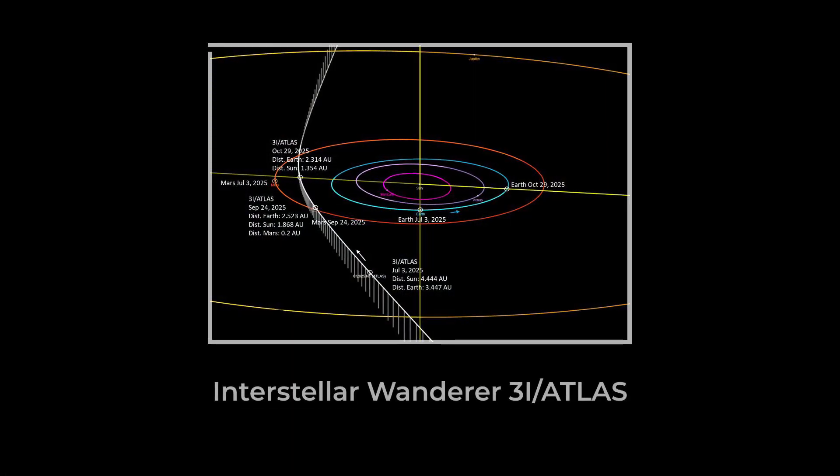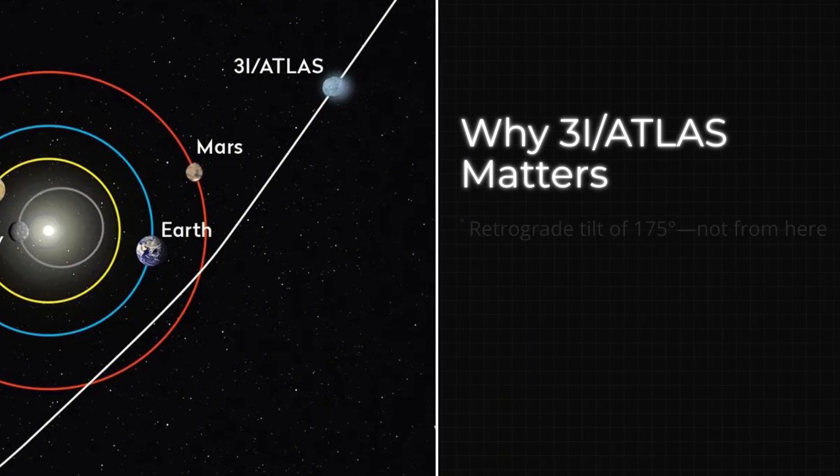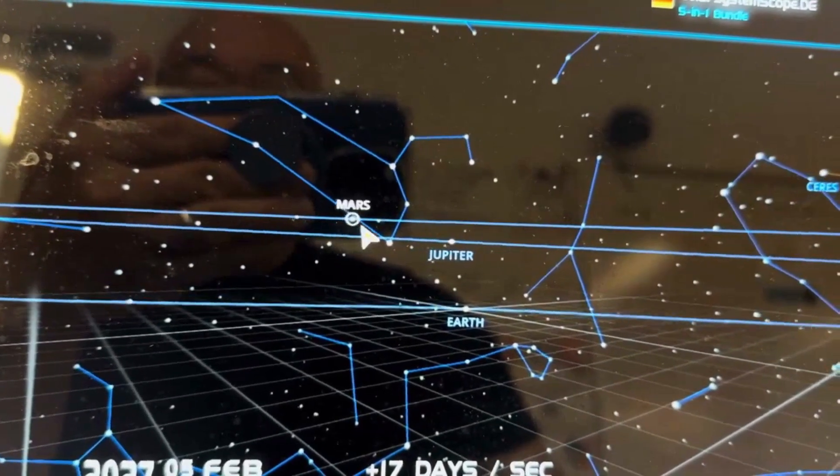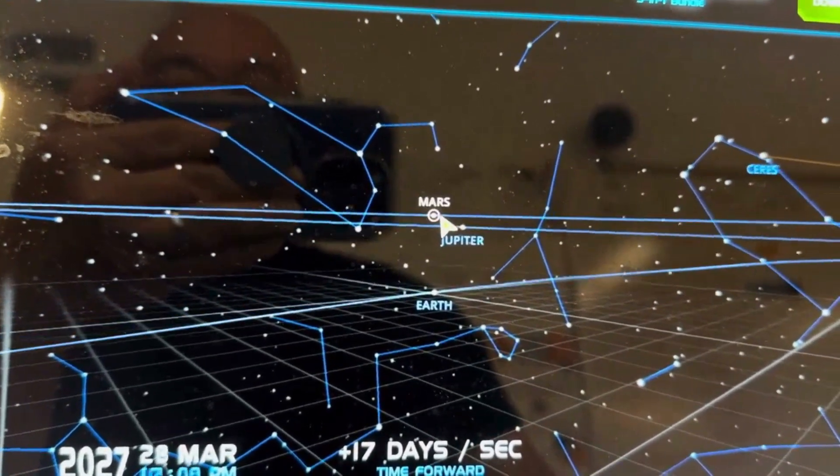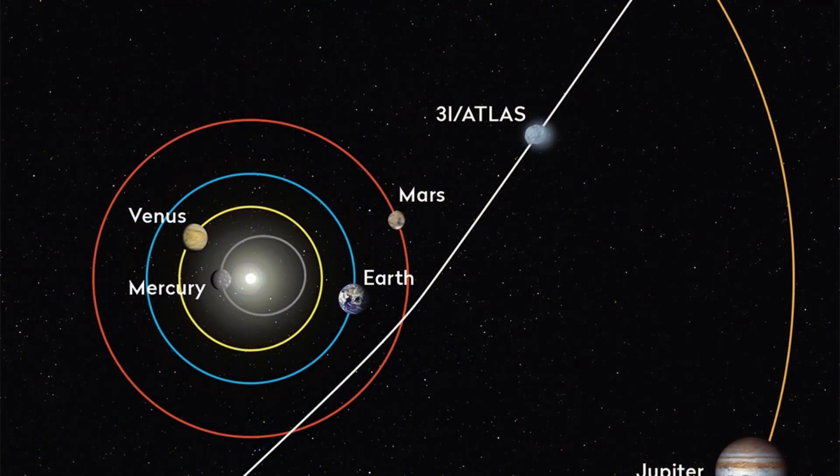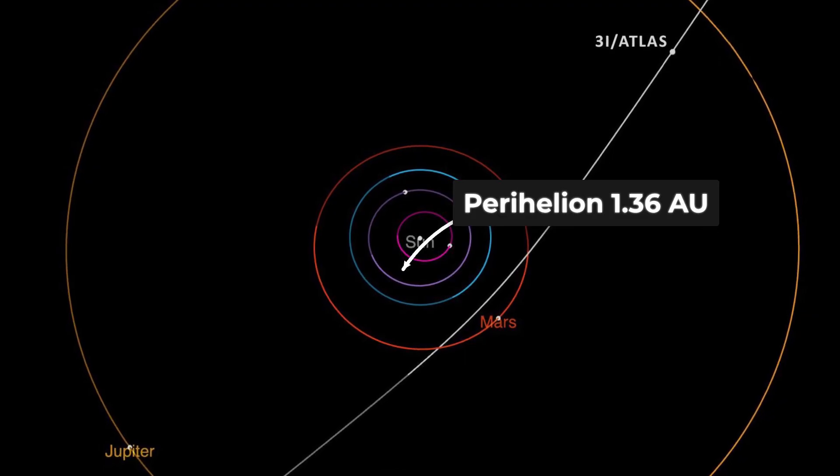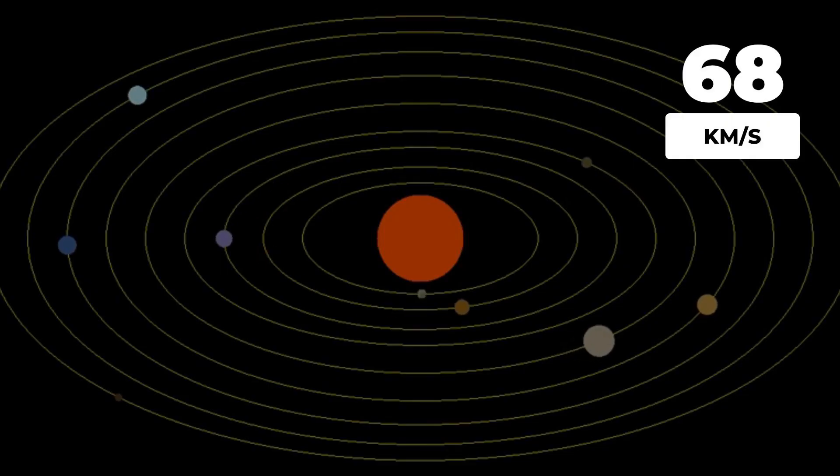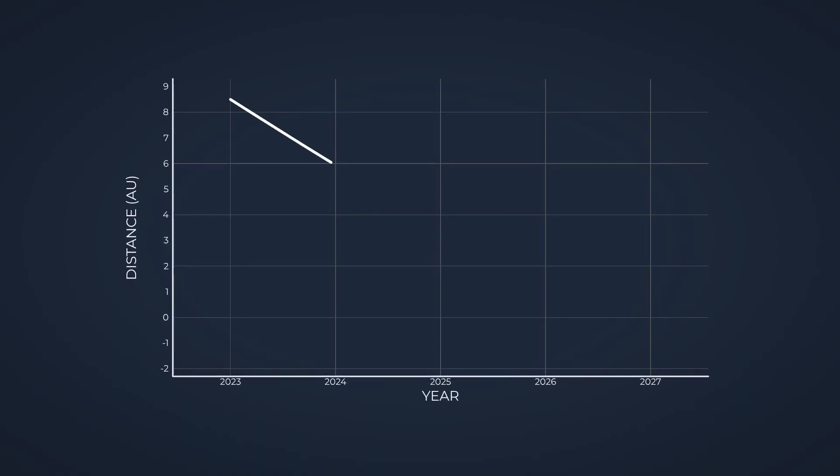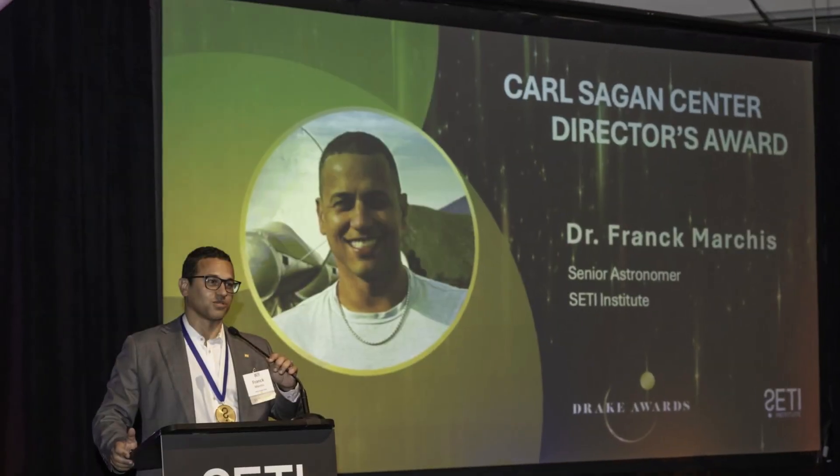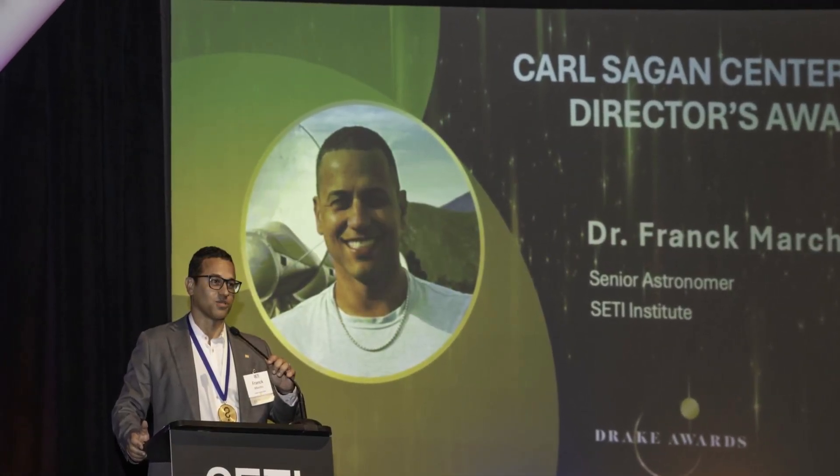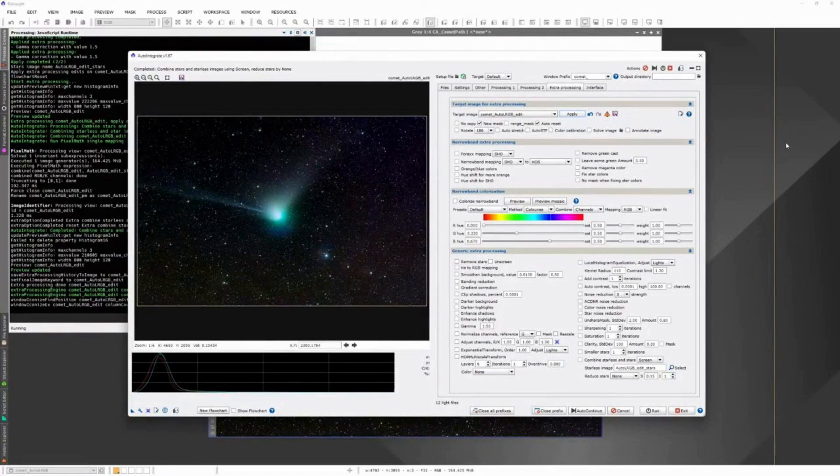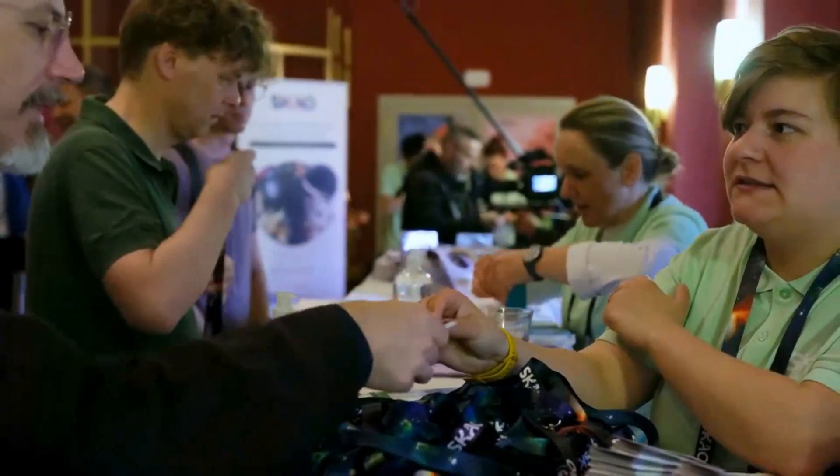Its orbit was hyperbolic, meaning it wasn't bound to the Sun and would never return. The numbers were striking—a tilt of 175 degrees, skimming the plane of the planets, but moving in the opposite direction, and an inclination just 5 degrees off the ecliptic. Early projections showed it would pass near Mars in October, then swing closest to the Sun at 1.36 astronomical units on October 29th, moving at nearly 68 kilometers per second. There was no threat to Earth—its closest approach would be 1.8 astronomical units—but its interstellar origin made it a rare prize.